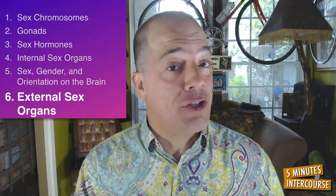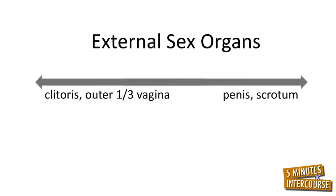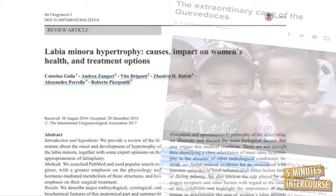Ingredient number six: external sex organs. Twenty weeks after conception, dependent upon testosterone levels and its respective receptor sites, the penis and scrotum are formed — or without hormonal intervention, the clitoris and outer one-third of the vagina form. The size of external sex organs is partly due to testosterone levels and receptor sites, potentially causing an enlarged labia, micropenis, or in extreme cases delaying penile growth until puberty. What external sex organs do you have? Are you sure?